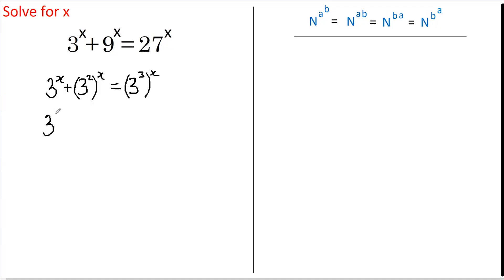Reversing the powers, we get 3 to the 2x equals 3 to the 3x. If I now divide everything by 3 to the x, I get 1 plus 3 to the x equals 3 to the x squared.